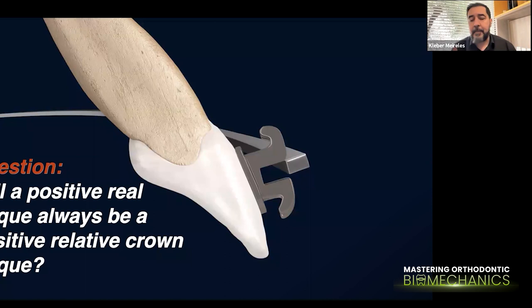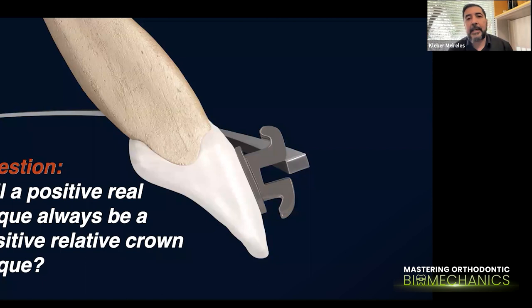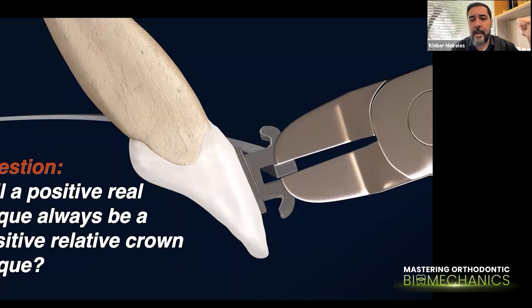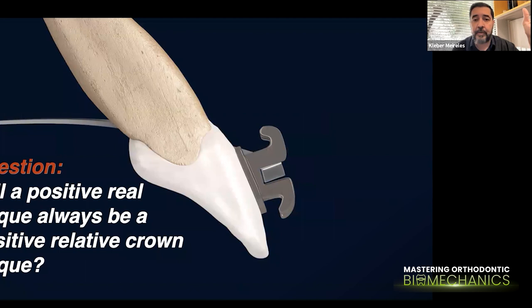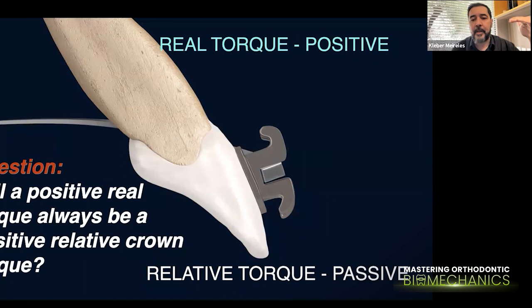It's all about the relationship of the torsion of the wire and the inclination of the anterior teeth. If the torque is passive and you want to change the inclination of anterior teeth, it won't happen because there's no active situation.